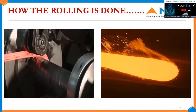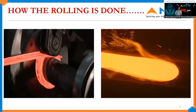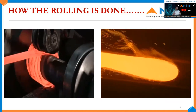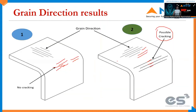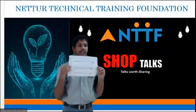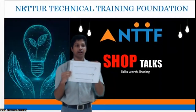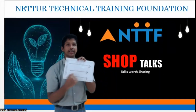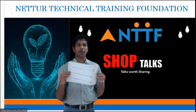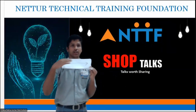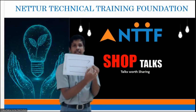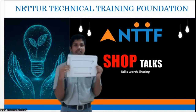Let me show you a live example. Let us think of this paper as a sheet metal component. These arrows indicate the Grain Direction. That means the metal is flowing in this direction, so that is the Grain Direction of the sheet metal.